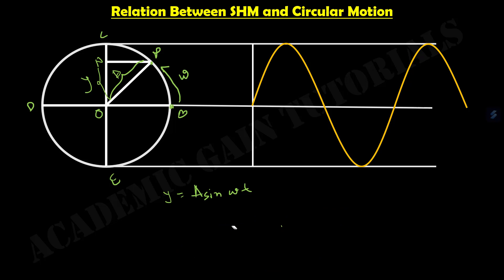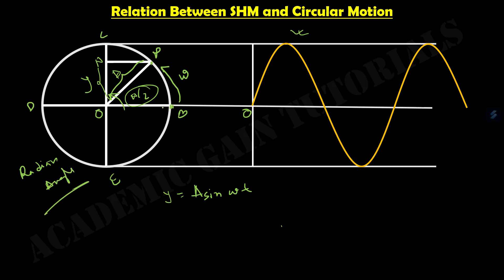Our displacement equation is A sine omega T, so I draw a sinusoidal curve. When our body is at point B, we take this as the mean point, represented as O. When our theta becomes pi by two — and we must remember this is a radian angle — the displacement becomes maximum, which is equal to A. So this is our maximum displacement A.